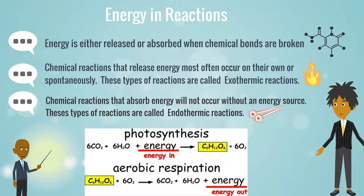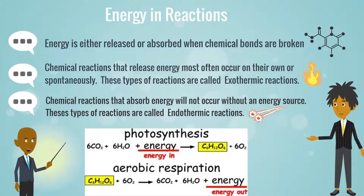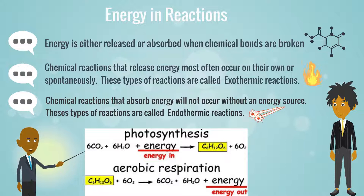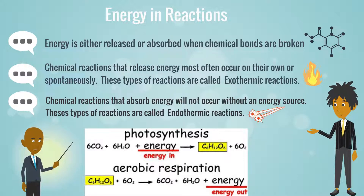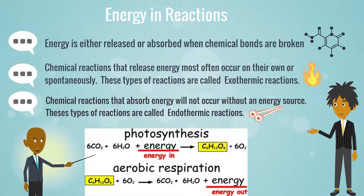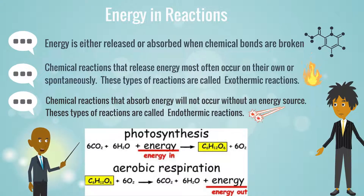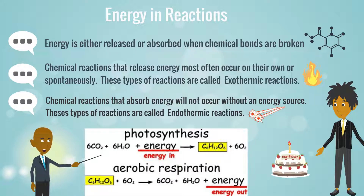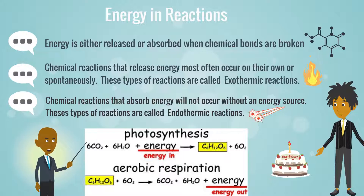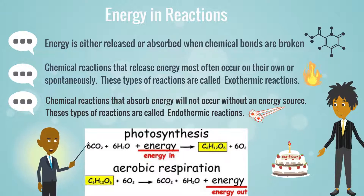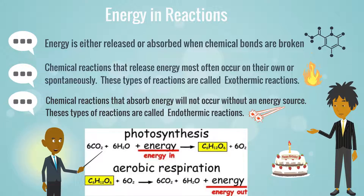Let's take a look at some everyday endothermic and exothermic reactions, starting with photosynthesis. In photosynthesis we have three reactants: six carbon dioxide plus six H₂O plus energy input from the sun, which produce the products C₆H₁₂O₆ (glucose) plus six oxygen molecules. Since energy is going in, this is an endothermic reaction.